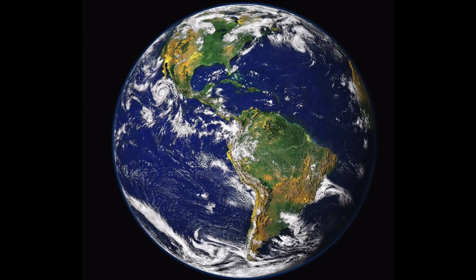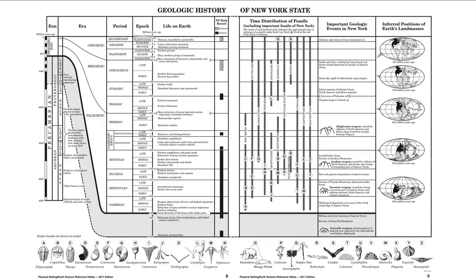Without oxygen, as we know, living things would not be able to survive. To better understand the history of Earth and the history of New York State, we have two pages in our reference table — pages 8 and 9. This is a centerfold, meaning you have to lay them down next to each other in order to read them correctly, and you should always make sure that they line up from left to right.